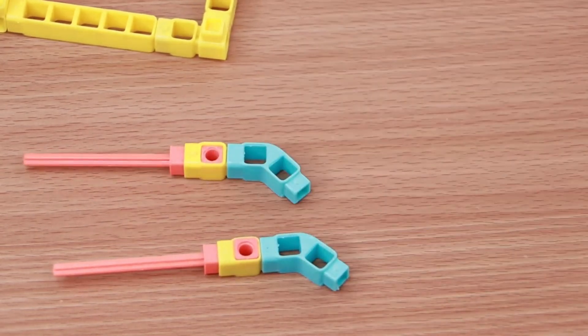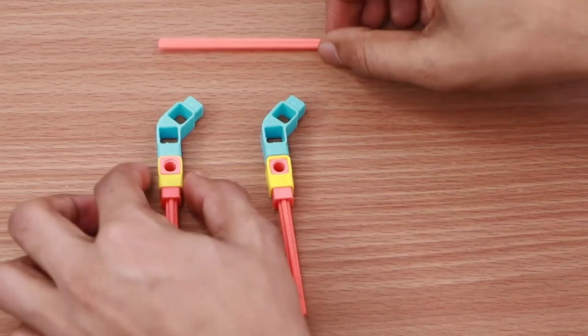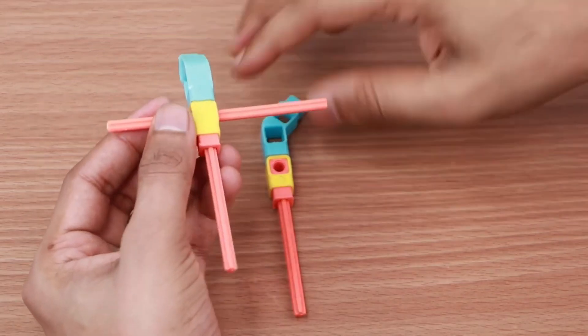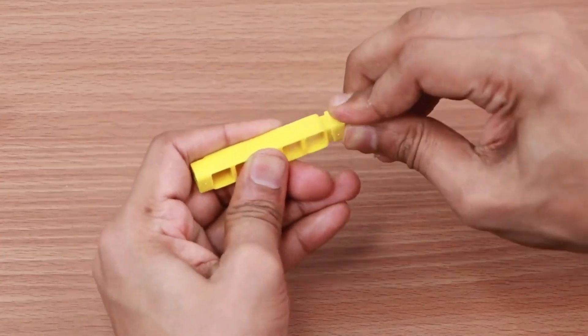Repeat the process to create another drumstick. Now take a 90 mm long axle and pass it through the two drumsticks. Now join one five-hole beam and a one-hole beam.